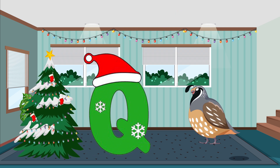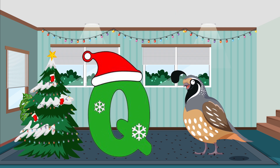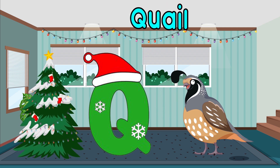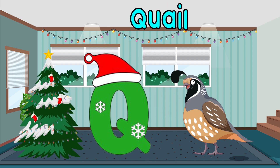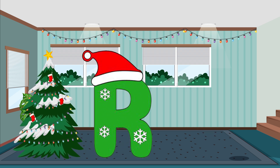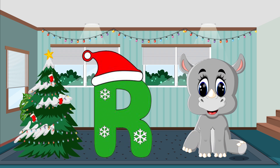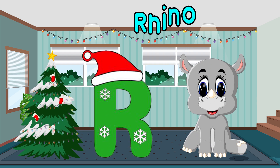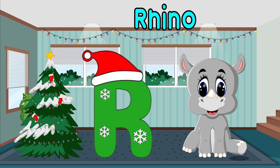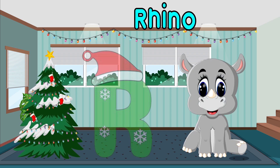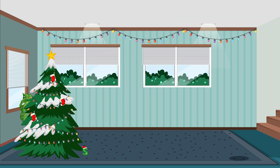Q is for quail. Q, Q, quail. Q, Q, Q, quail. Q, quail. R is for rhino. R, R, rhino. R, R, rhino. R, rhino.